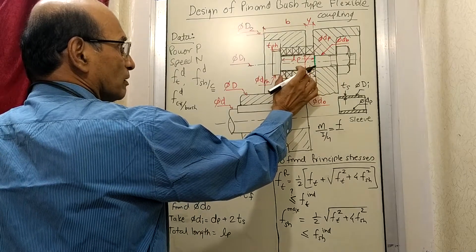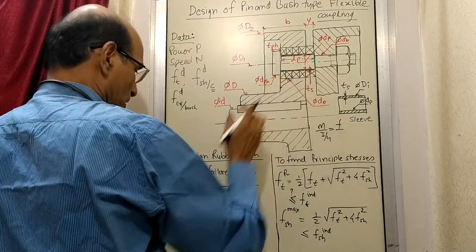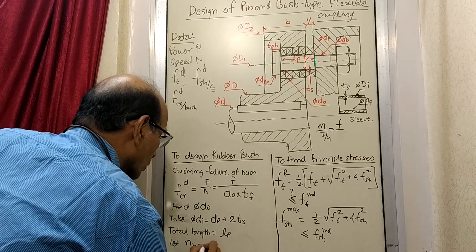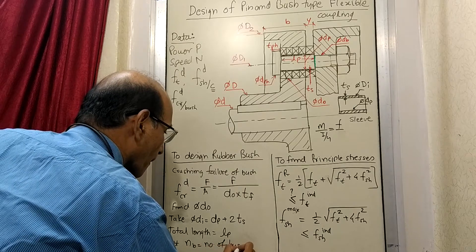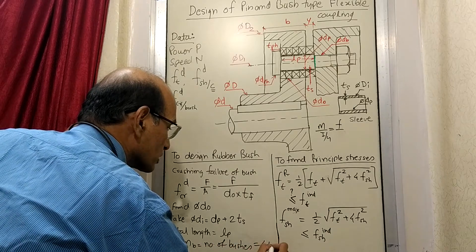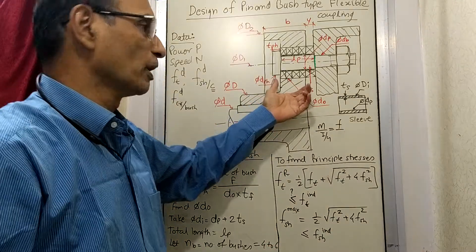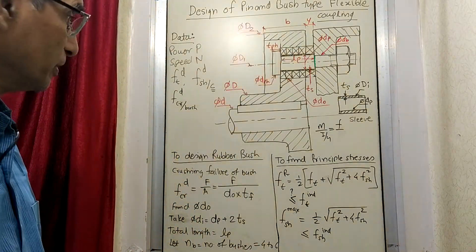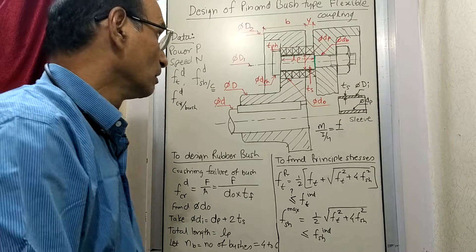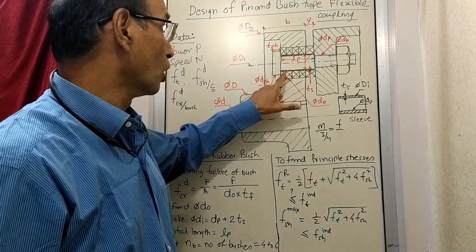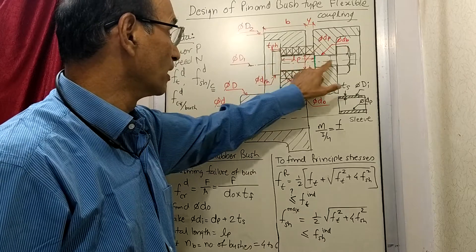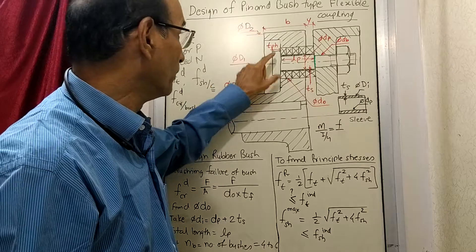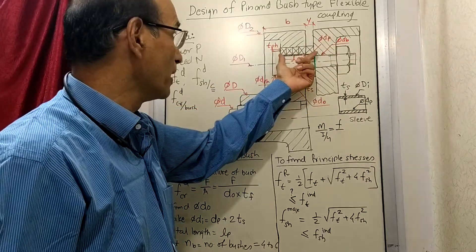Out of the total bush length Lp, t_f is in contact. You can select a certain number of bushes — let N_b equal to 4 to 6, so depending on the length you can have 4, 5, 6, or 7 individual bushes. The pin is fitted here and clamped by a nut so it will not move. The pin has a head, and between the head and the other flange all the rubber bushes are packed, with the flange on the outside.